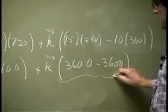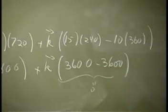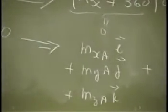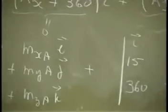36 minus 3600. So this all adds up to 0. Now we are going to put this one with this. And that gives you another 3 such equations.